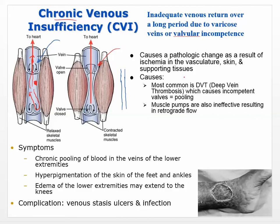A thrombus in the deep veins can lead to incompetent valves — a valve that isn't doing what it's supposed to do. If that clot is thrown, it can cause a pulmonary embolism. Deep vein thrombosis is in the deep veins because those are the ones with the muscle pumps. When a thrombus happens in there it can cause a lot of pain, felt well in the area where it occurs.